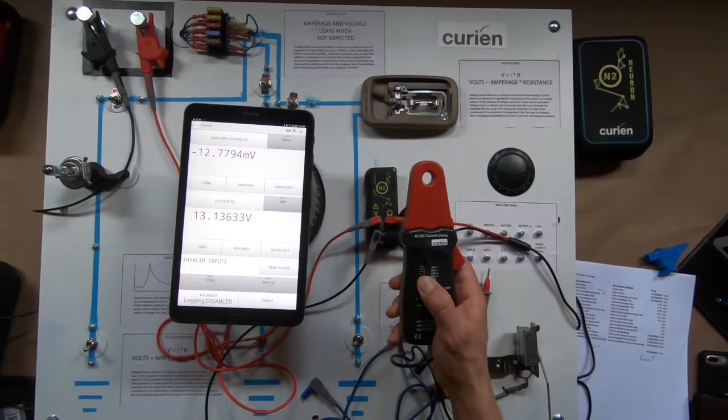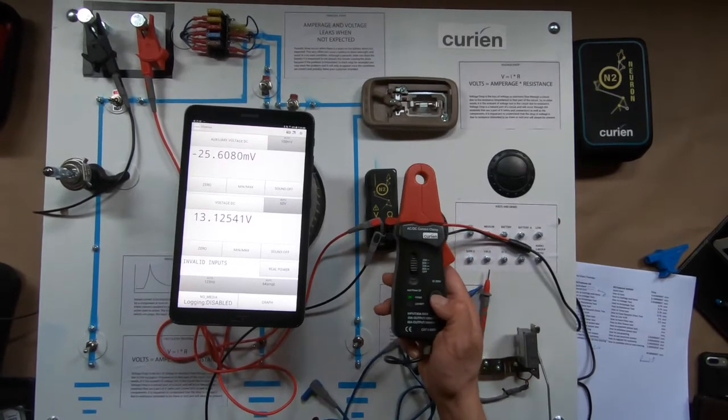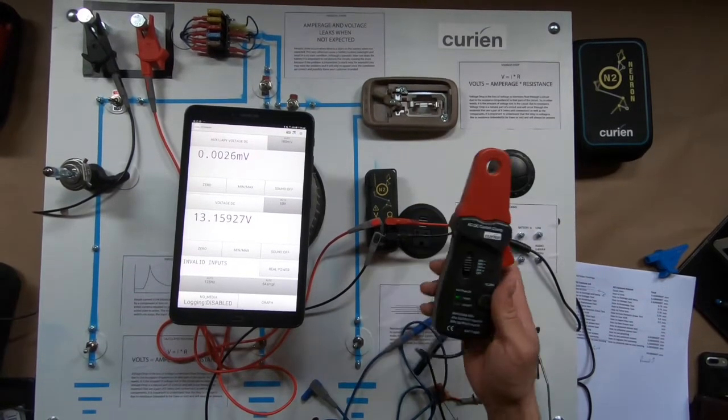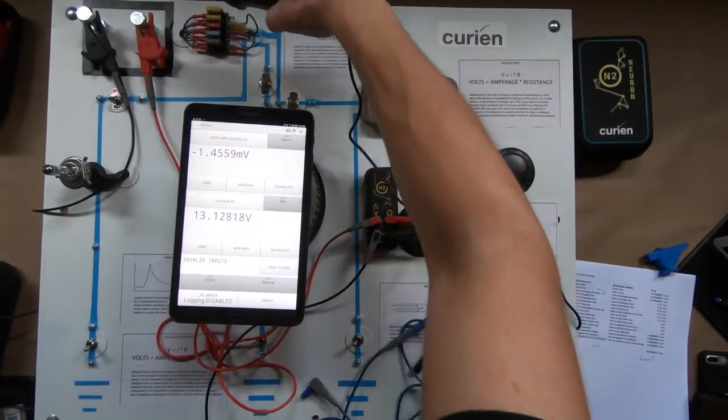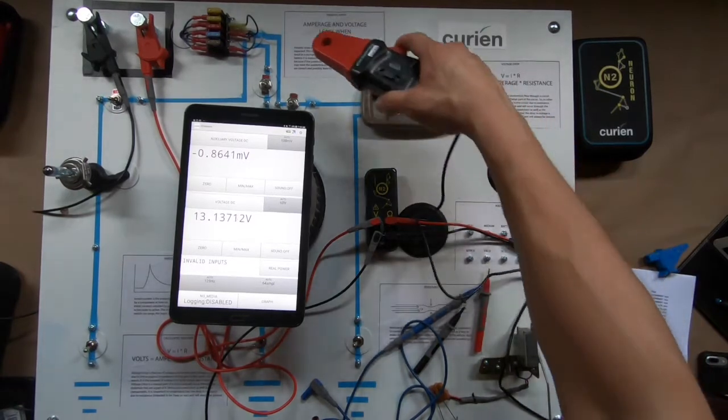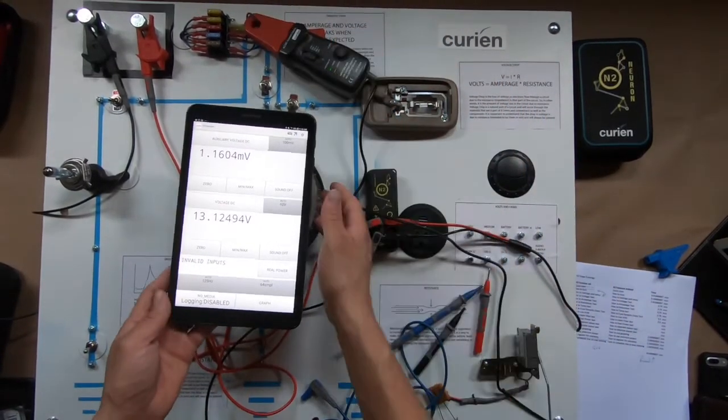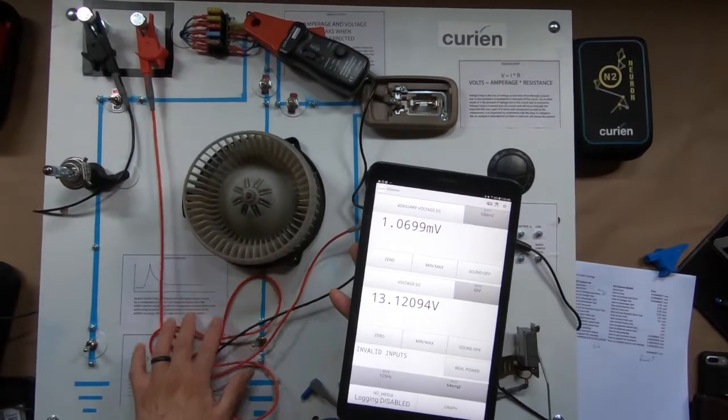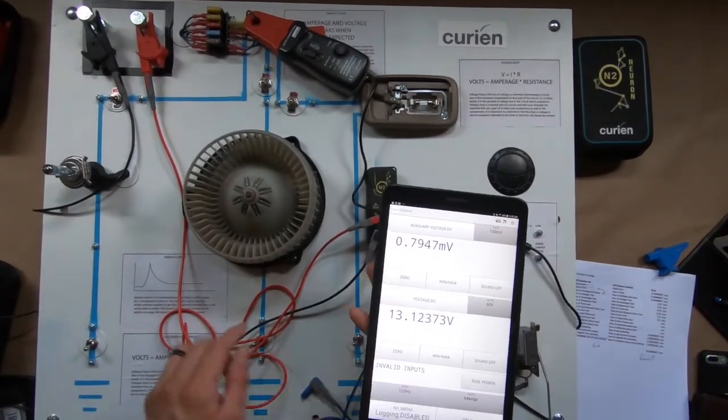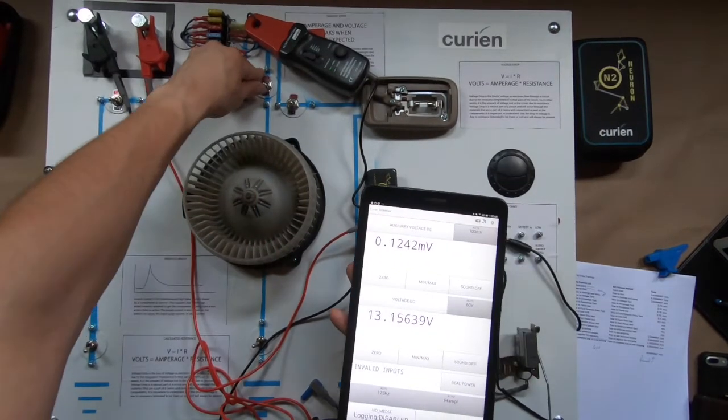All right so we've gone ahead and set this up. Now we're sitting on the 20 amp DC setting. I'm going to go ahead and zero that out. So as I come around here we go, this will be a good example. As I come around to that particular circuit we are going to activate this guy and this is our big fan.